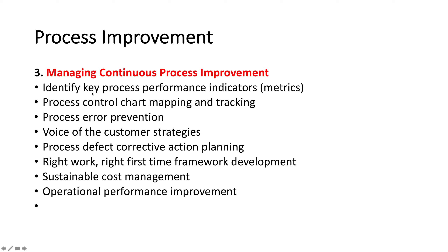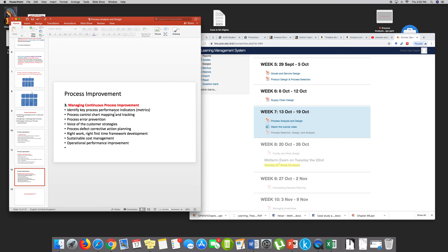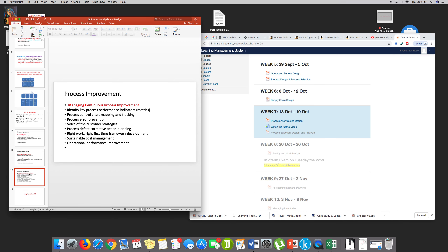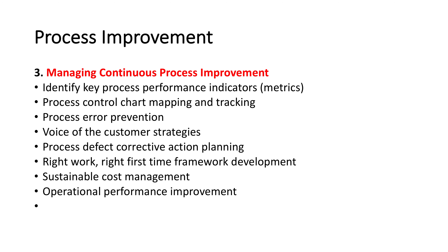Identifying key process performance indicators means that every performance step, task, or node has indicators. What are the key indicators? You could have matrices for that — the book elaborates on various matrices. A lot of them get very complicated and are a function of engineering, which is why this course is also advisably taken by engineers.